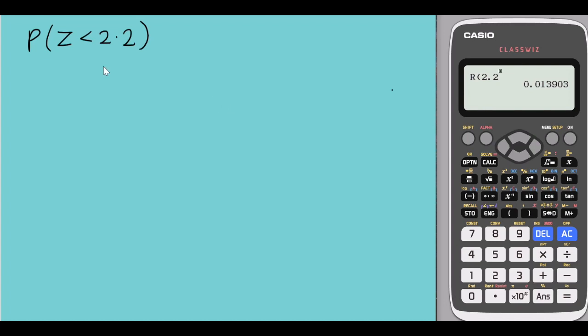What if I have this question? Find the probability that Z is less than 2.2. When I illustrate the area, the mean is 0, 2.2 would be on my right hand side.